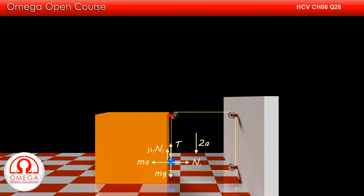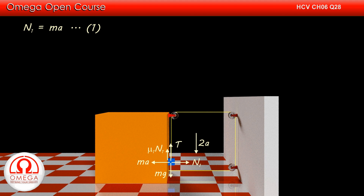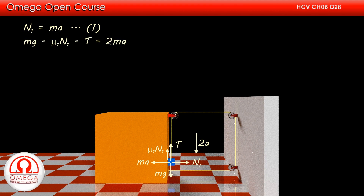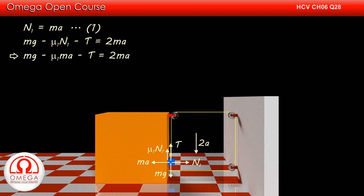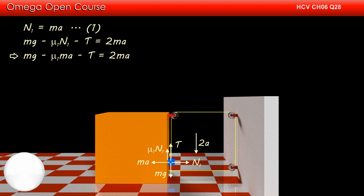The acceleration of the block with respect to the bigger block is 2A. Balancing the forces in the horizontal direction, we get N1 = mA. Writing the equation for motion in the vertical direction, we get mg − mu1·N1 − T = 2mA. Putting the value of N1, we get mg − mu1·mA − T = 2mA, which implies T = mg − (2 + mu1)·mA.